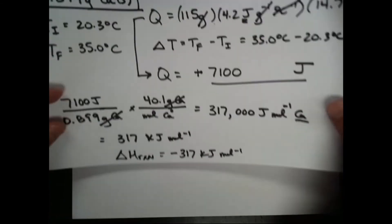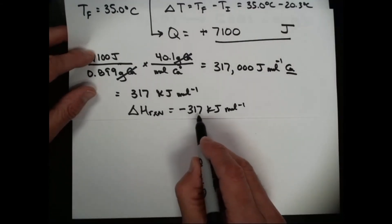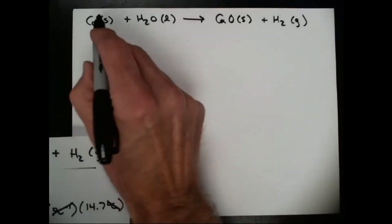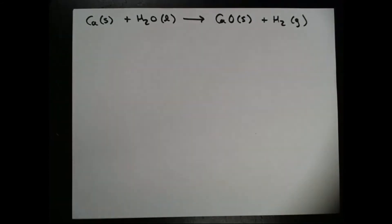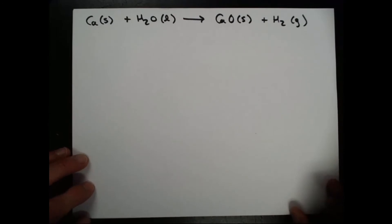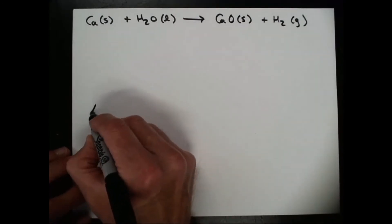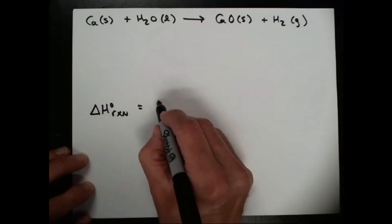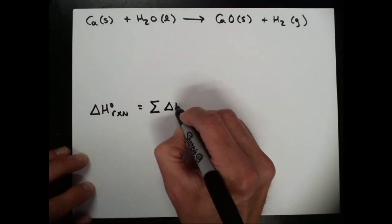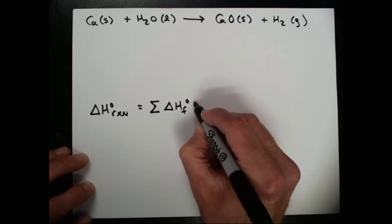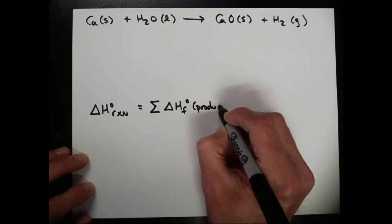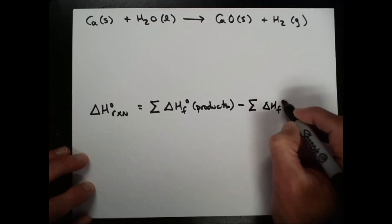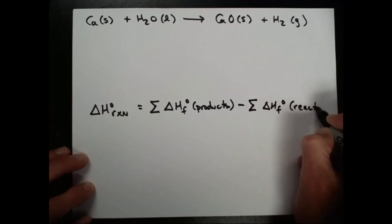Let's see how our value that we measured of negative 317 kilojoules per mole for this particular reaction, let's see how that compares to standard values. You might remember that we can calculate the standard enthalpy for any reaction by taking the sum of the standard enthalpy of formation of the products and subtracting from that the standard enthalpy of formation of the reactants.